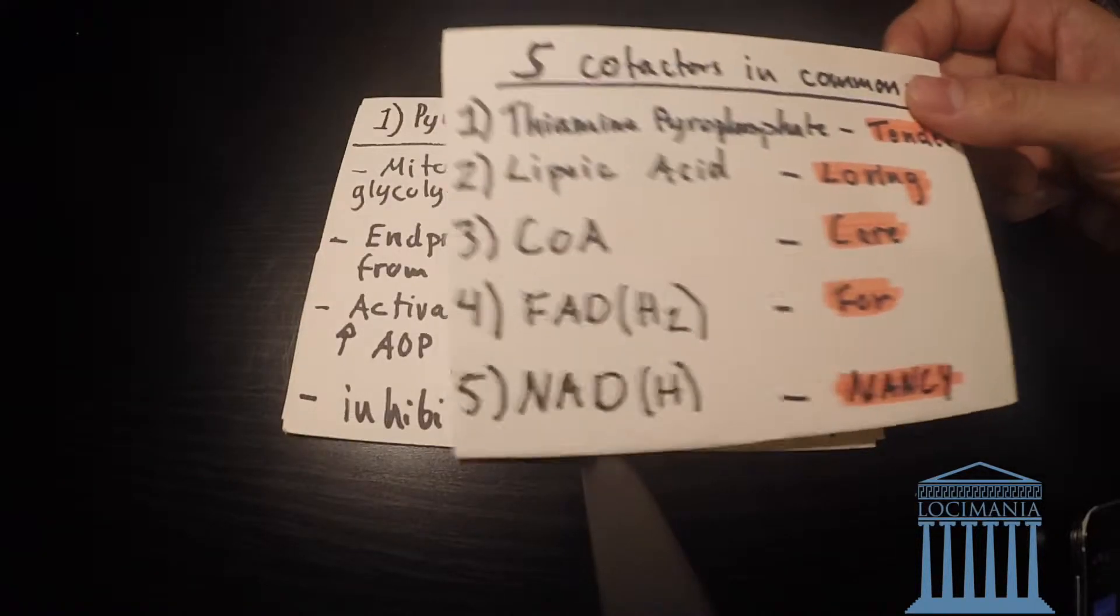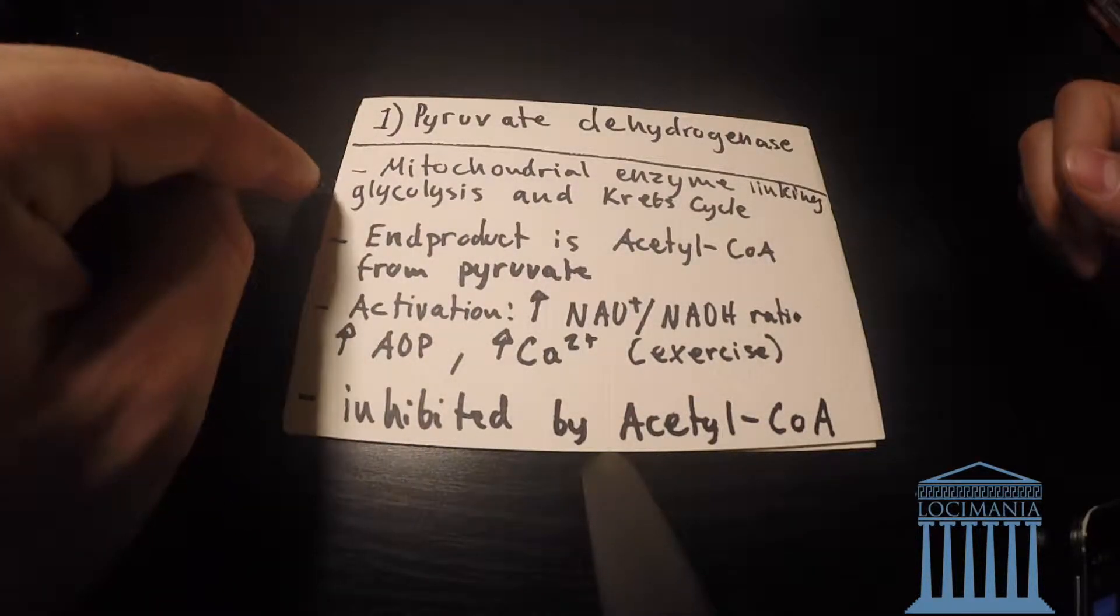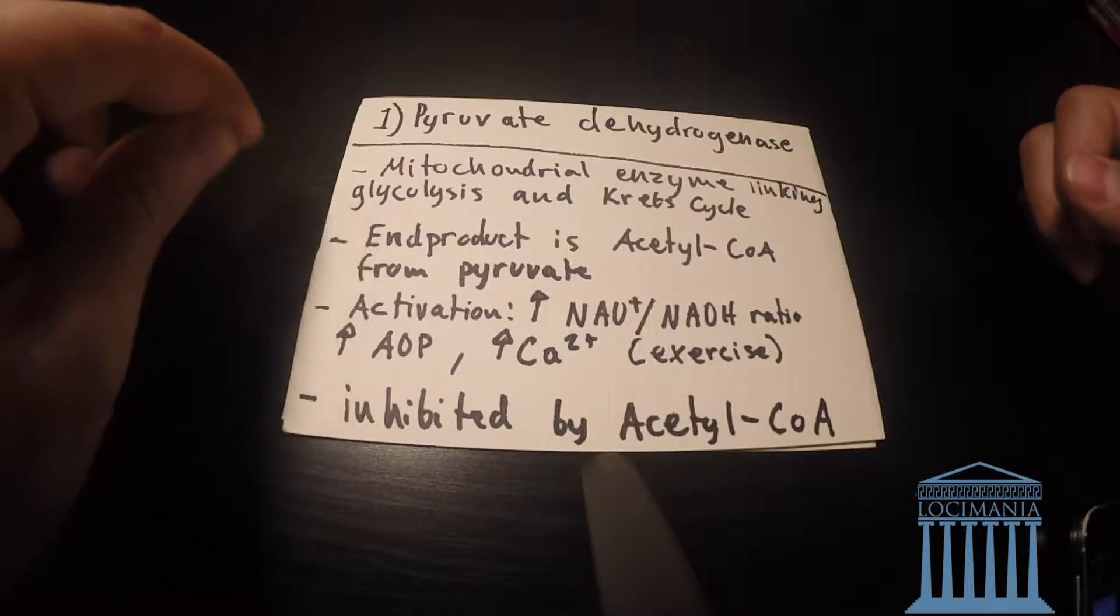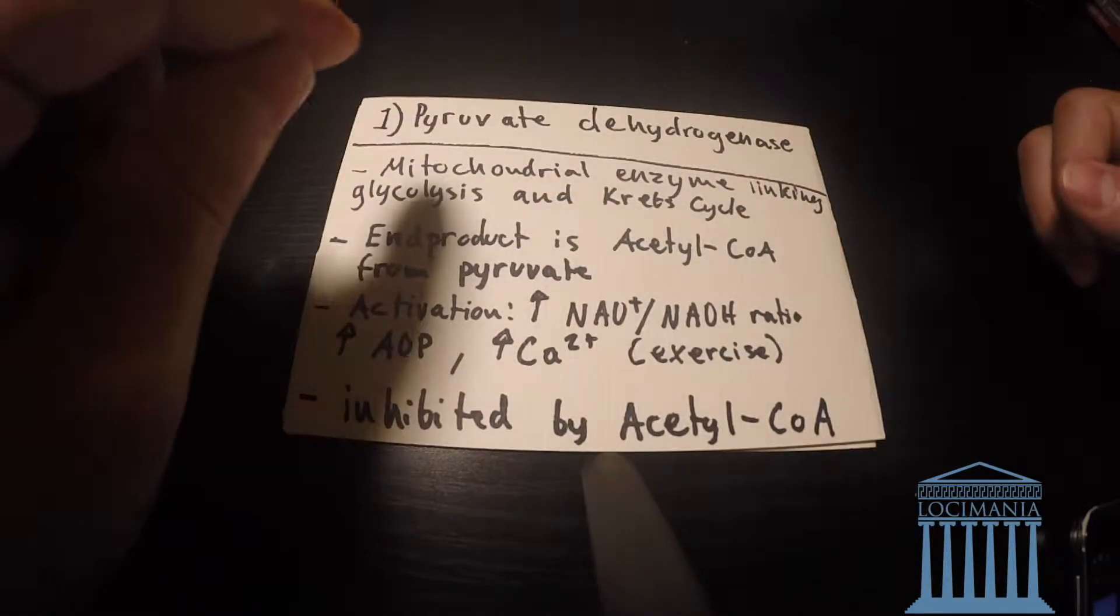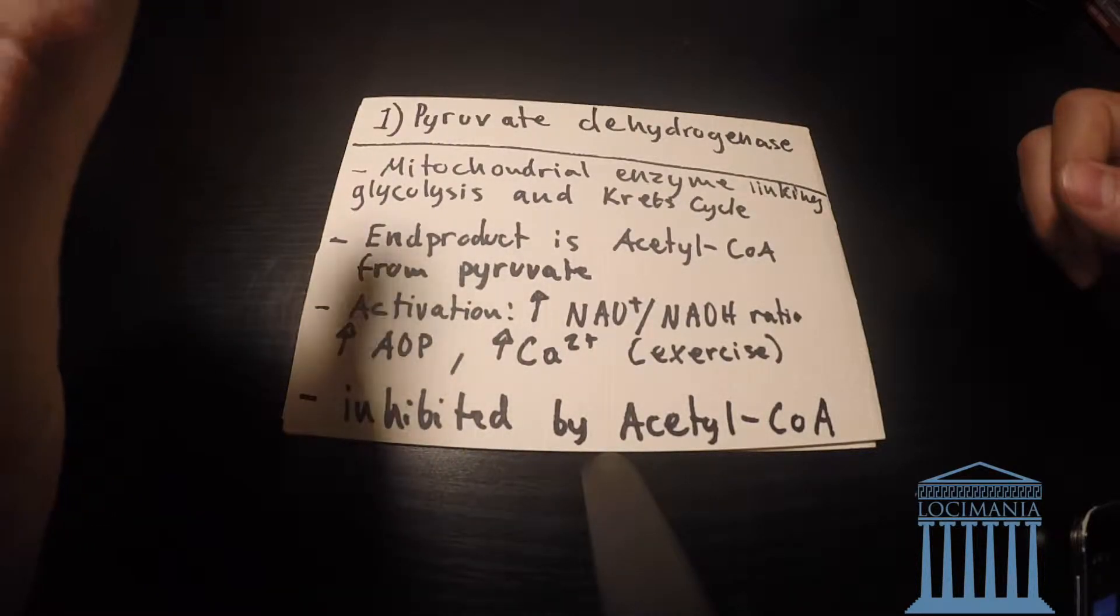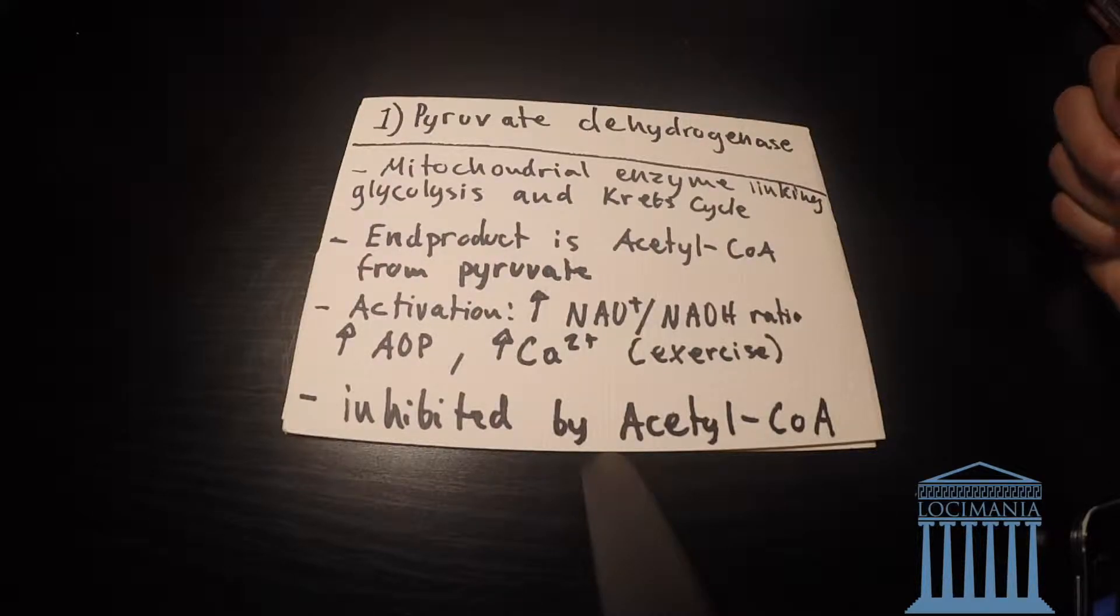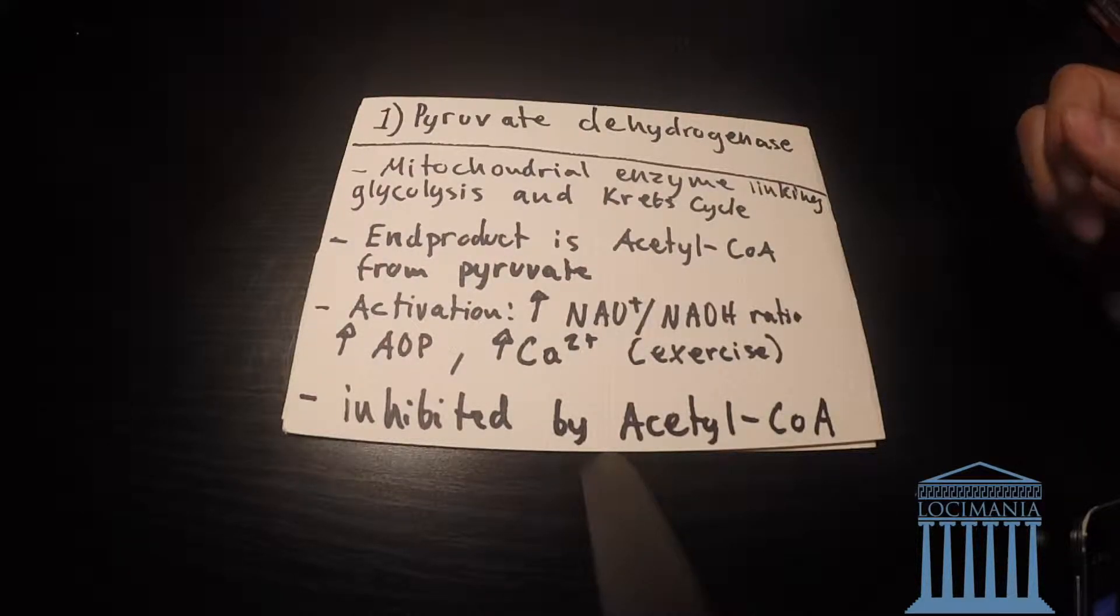Let's go through the other page. The first one is pyruvate dehydrogenase. It's a mitochondrial enzyme linking glycolysis and the Krebs cycle. The end product is acetyl-CoA from pyruvate. Activation occurs with increased NAD+/NADH ratio, increased ADP, and increased calcium after exercise.